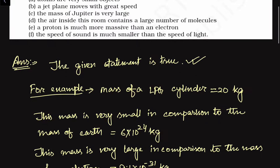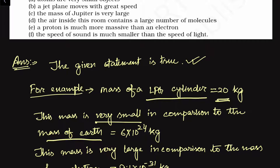For example, if we consider the mass of an LPG cylinder — suppose it is not completely filled, so its weight is 20 kg. This mass is very small in comparison to the mass of the earth. If we compare the mass of the earth with the mass of the cylinder, then we can say that the earth's mass is far, very much greater than the LPG cylinder mass. So we have to compare with respect to what our quantity is smaller or bigger.